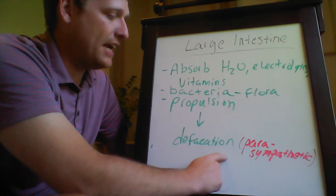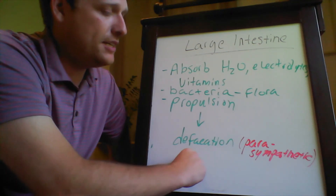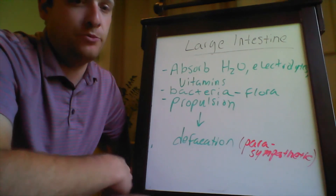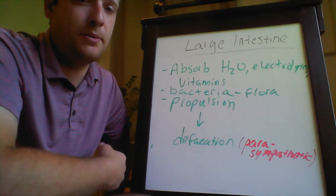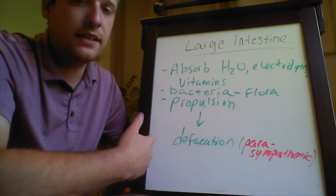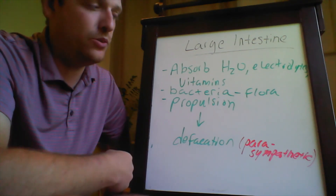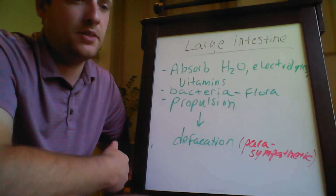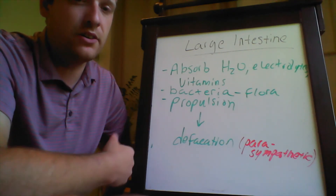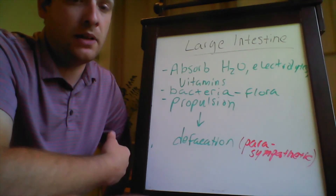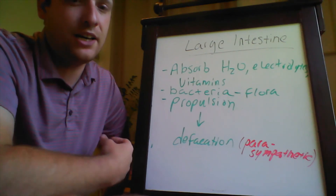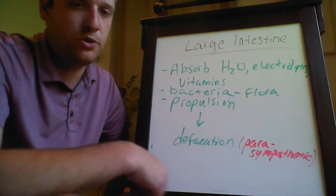Defecation is controlled by a parasympathetic reflex as well as the cerebral cortex. Lastly, we're going to take a look at some of those accessory organs — the pancreas, the liver, and the gallbladder — and how they contribute to our ability to digest and absorb nutrients.